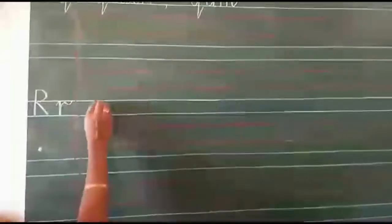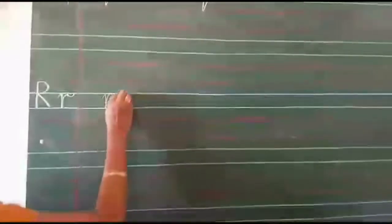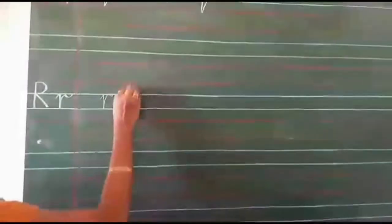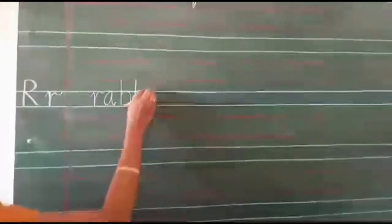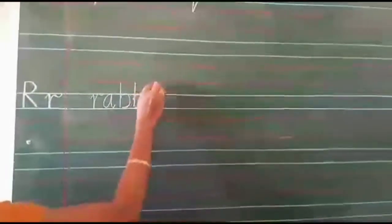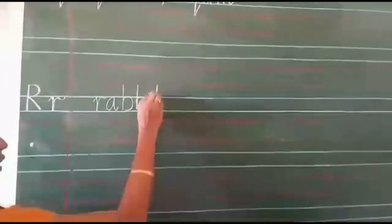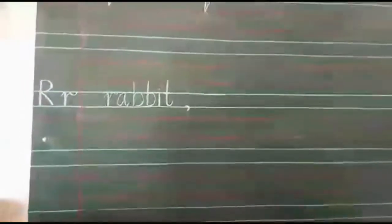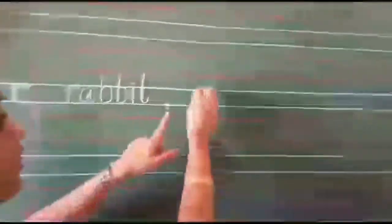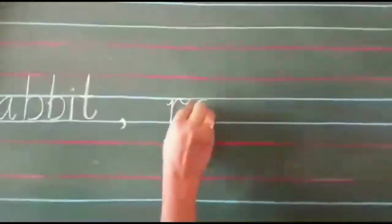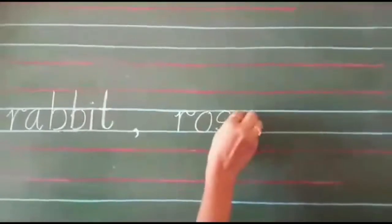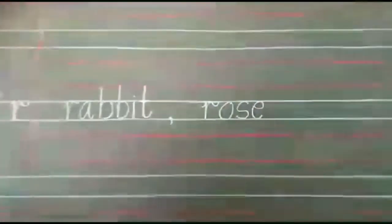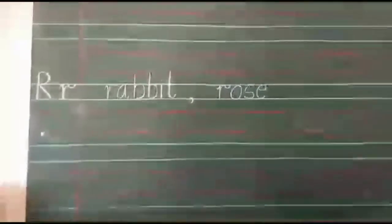So we will write the spelling of rabbit: R, A, B, B, I, T — rabbit. Comma, one finger space. R, O, S, E — rose. Okay.